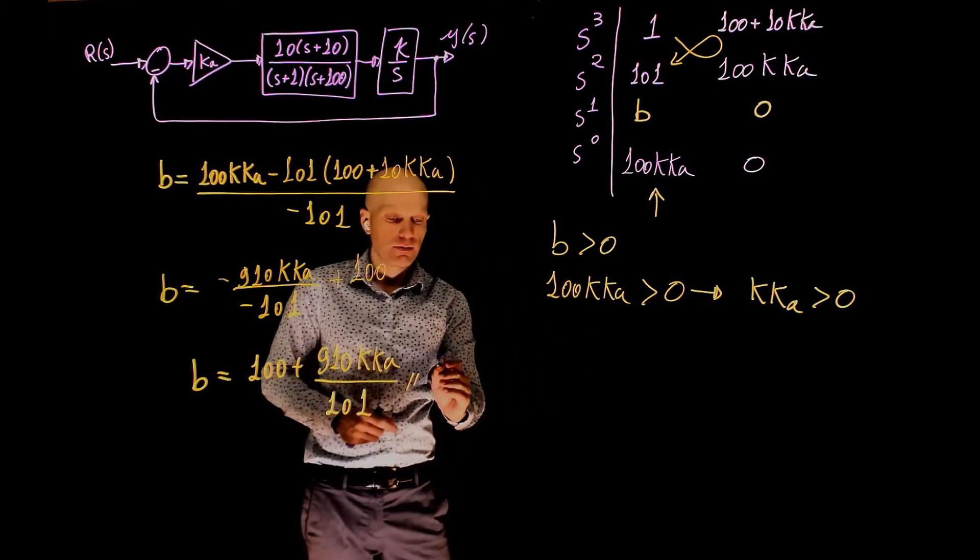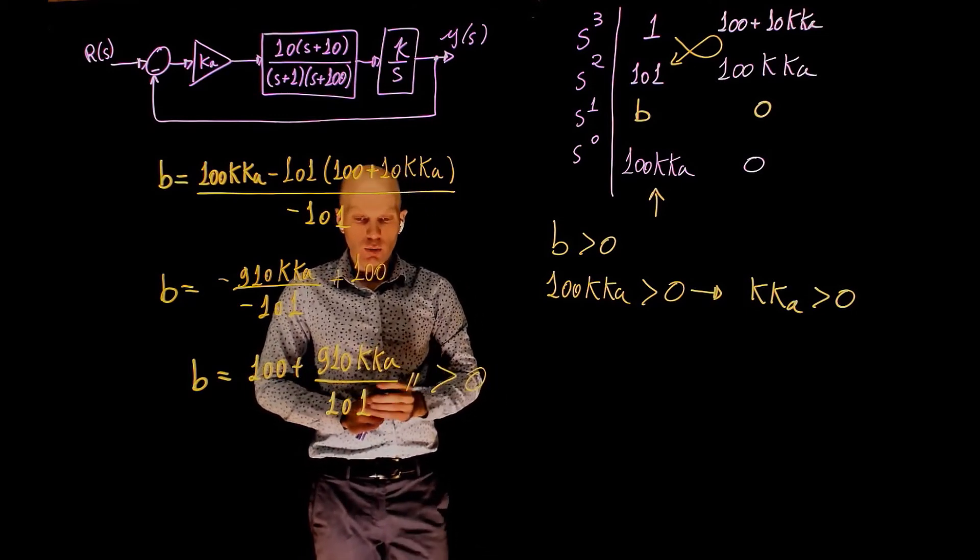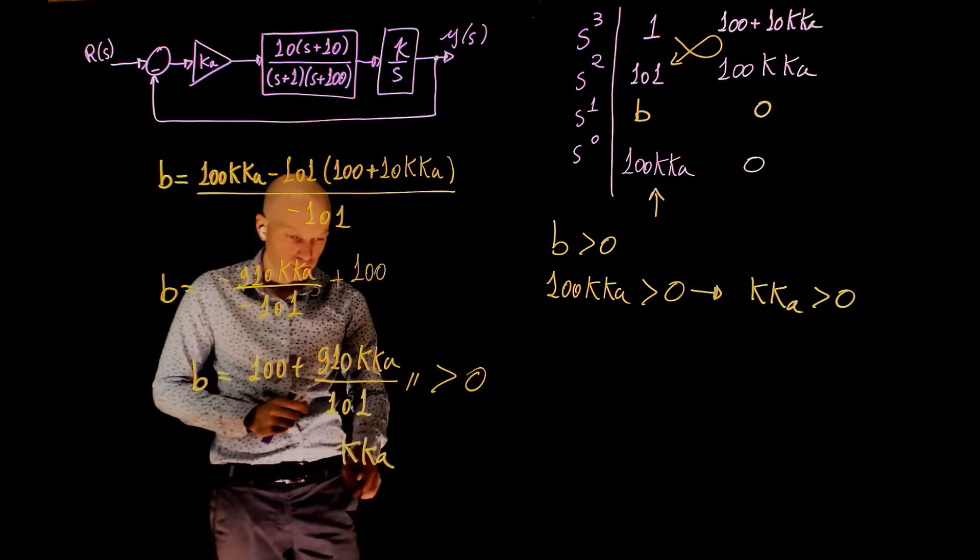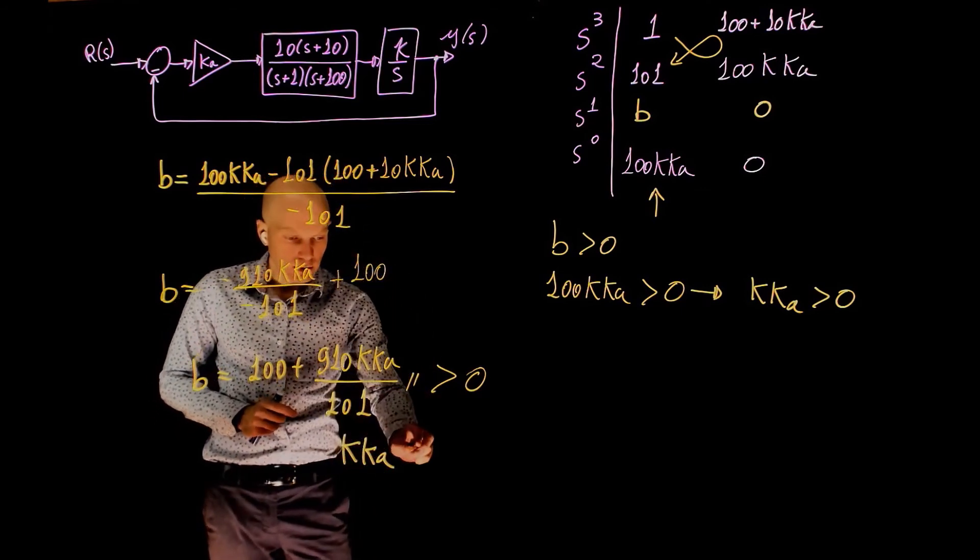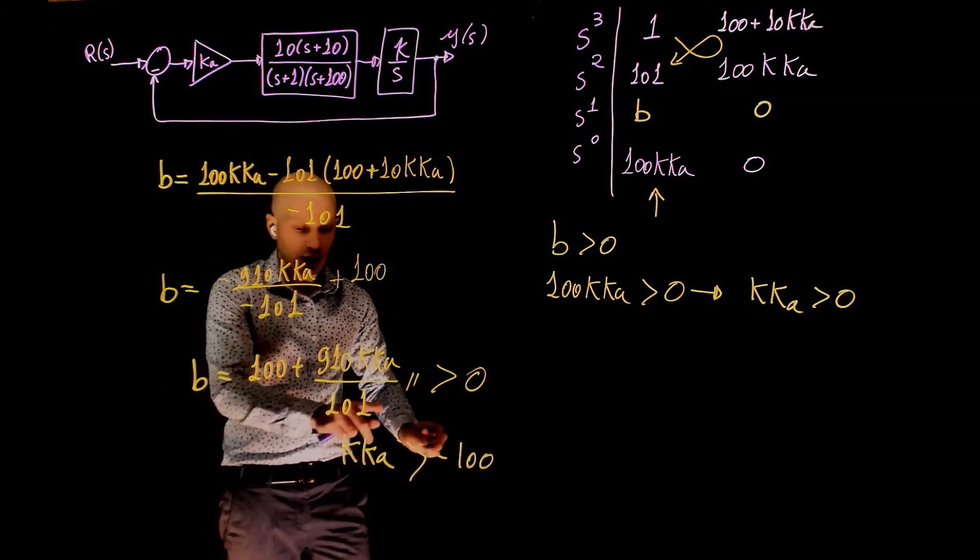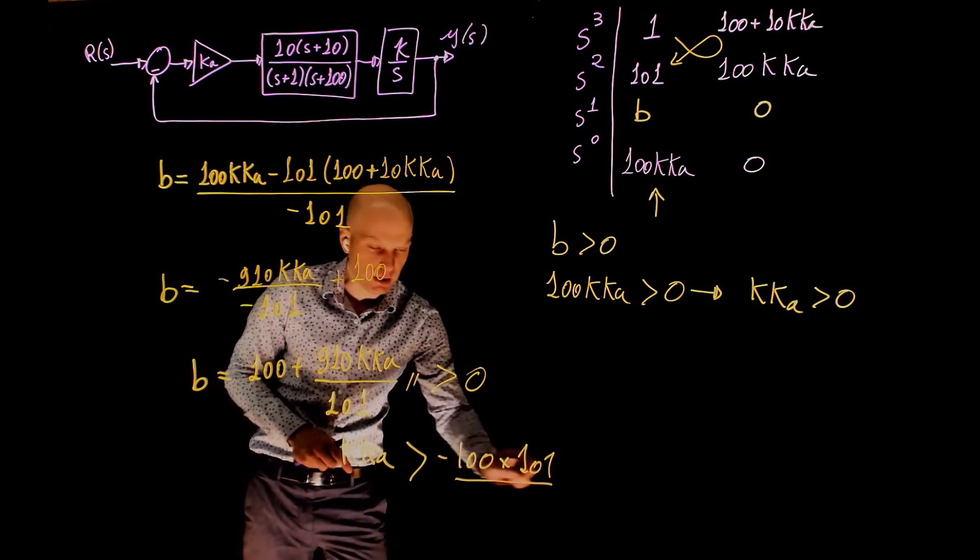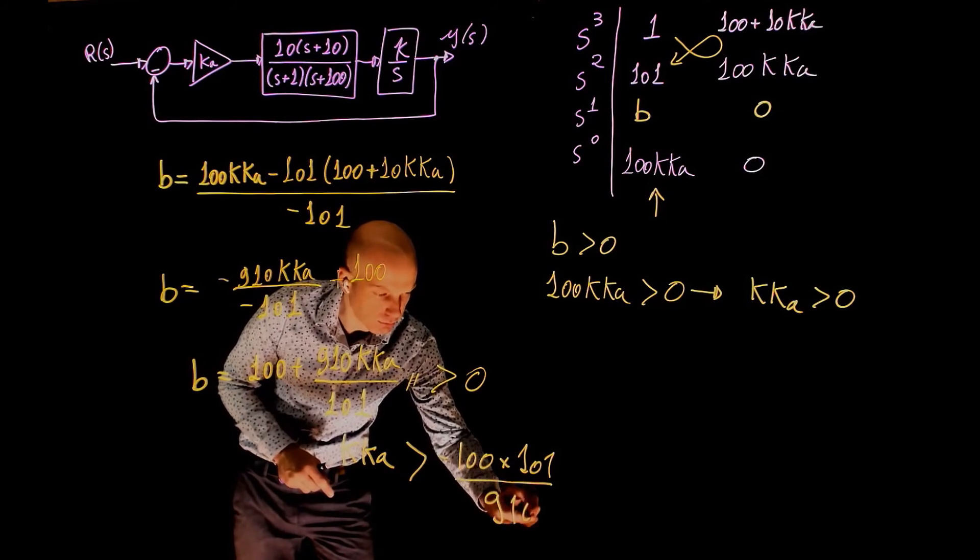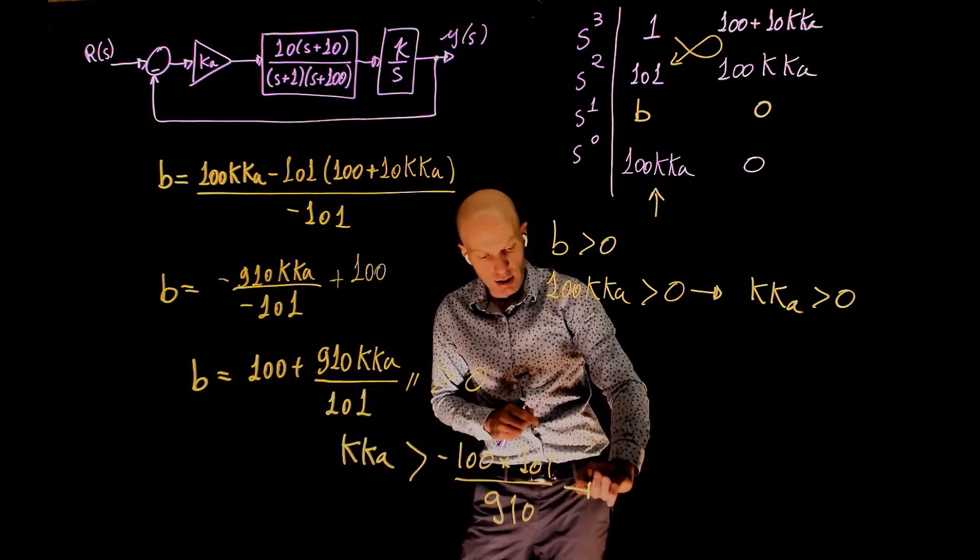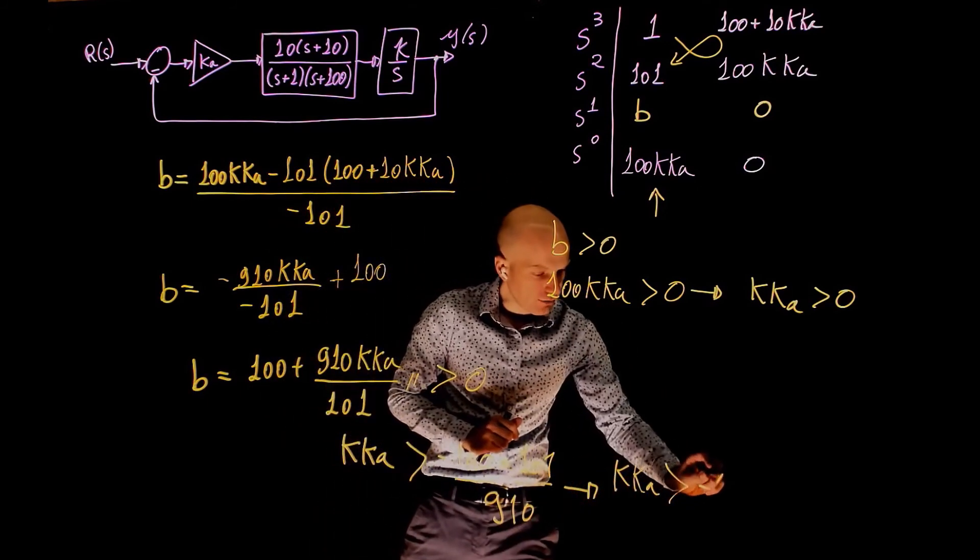Now look at the first condition here, which is the one you have written there. Now b needs to be greater than 0 as well. This means that kka needs to be greater than negative 100 times 101 divided by 910. So from this condition, kka needs to be greater than negative 11.09.